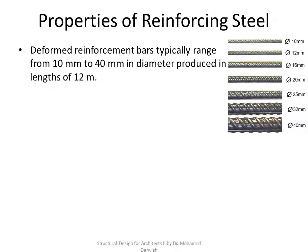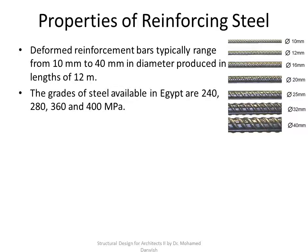Moving on to steel: steel ranges in size and properties. In size, you could find up to 40 millimeters in diameter, produced in lengths of 12 meters. The grades of steel available in Egypt fall into two main families. The first is mild steel: 240 MPa and 280 MPa yield strength. The second family is high-tensile steel: 360 MPa and 400 MPa.